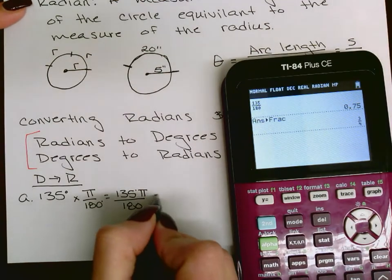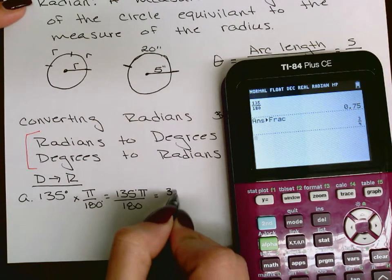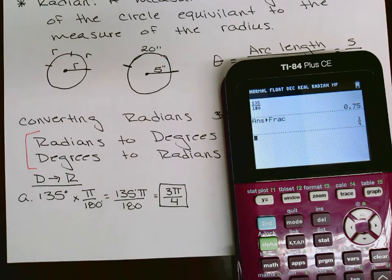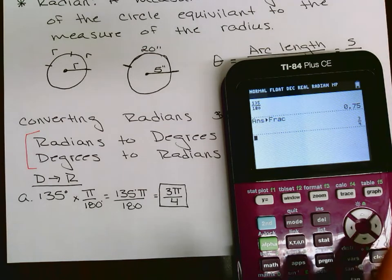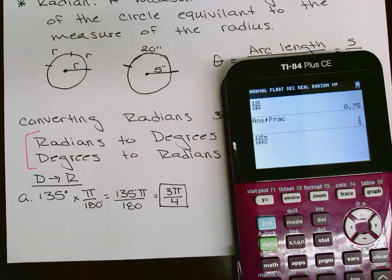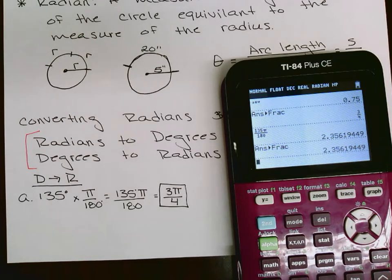So rewrite the reduced fraction as 3 over 4, then put the pi back in: the answer is 3 pi over 4. Be careful not to include the pi button in your calculator input — pi equals 3.14 and so on, which changes the whole thing into a messy decimal that you can't convert back to a fraction.